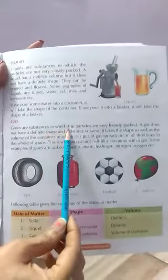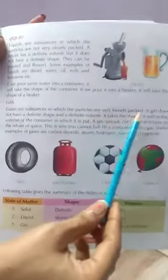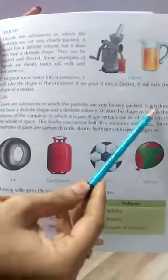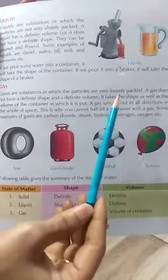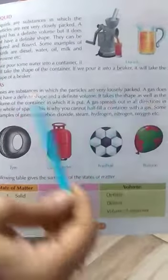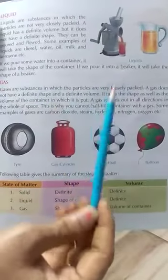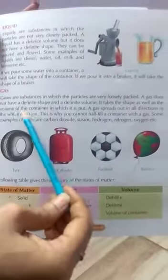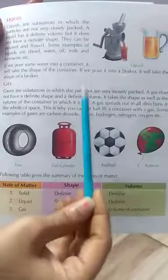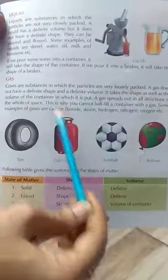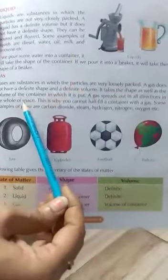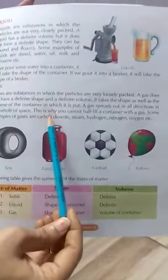Third is gas. Gases are the substances in which the particles are very loosely packed. A gas does not have a definite shape and a definite volume. It takes the shape as well as the volume of the container in which it is put. A gas spreads out in all directions in the whole of space.